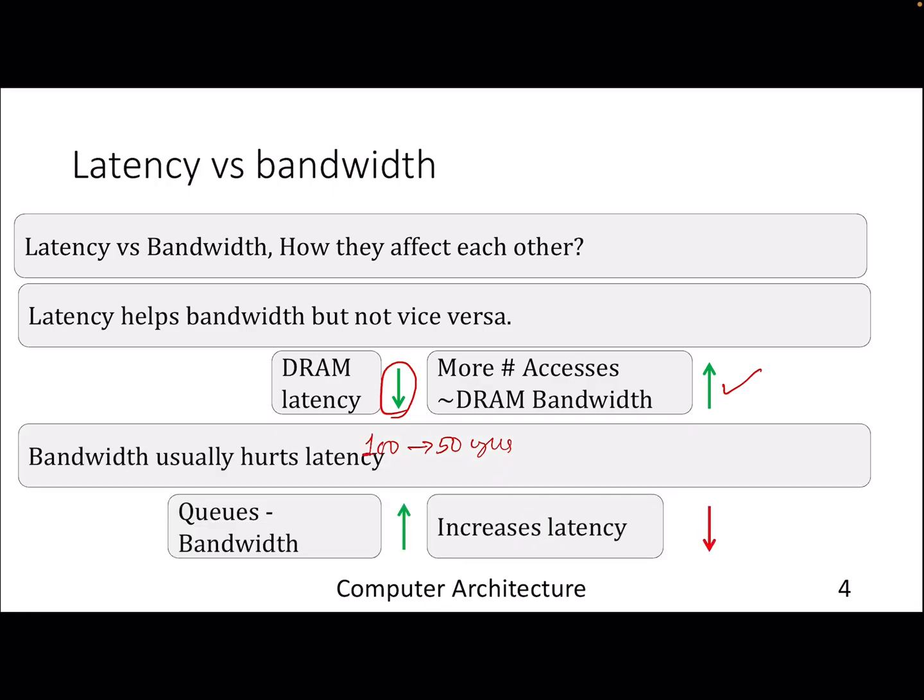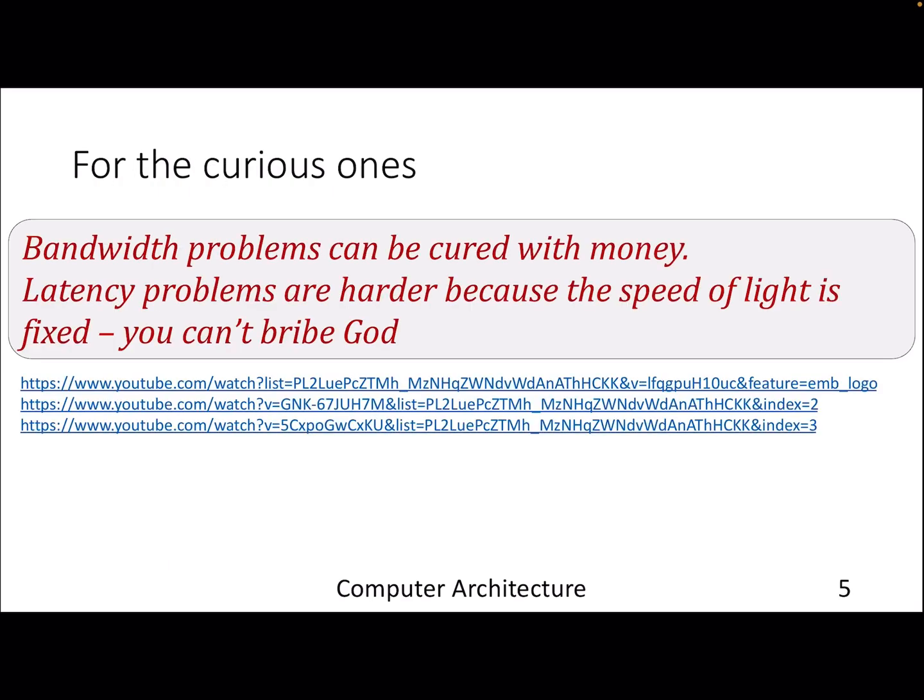But this is not the case when we talk about improving bandwidth. Whenever we talk about improving bandwidth—applicable to all areas of computer systems, networking, OS, database, architecture—we usually add queues or buffers. They help us to improve our bandwidth, but by adding them we are actually increasing the latency, which is not a good thing. Eventually your turnaround time or response time will go up. So the high level interaction is latency usually helps bandwidth, but not vice versa. If you are more curious about understanding these interactions from the computer architecture point of view, go and look at this video—a keynote given by Professor El Part at one of the conferences called ICS.